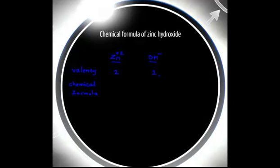Here, this one represents the number of zinc atoms involved in zinc hydroxide formation and this two represents the number of OH molecules involved in zinc hydroxide formation. So, the chemical formula can be written as Zn1(OH)2.